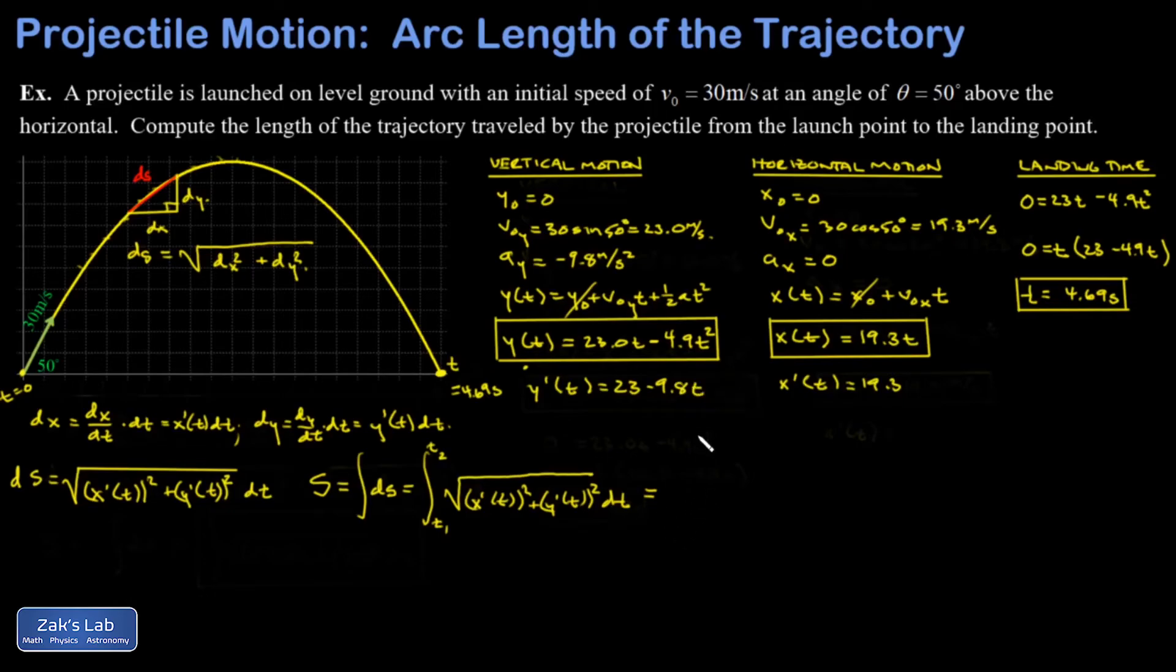And then we plug into the equation for arc length. And I have my initial and final time. And this integral could actually be done in symbolic form by using a trigonometric substitution. But since we're already using decimal approximations in the problem, there's no reason to do that. So I'm going to use a computer algebra system to numerically approximate it.